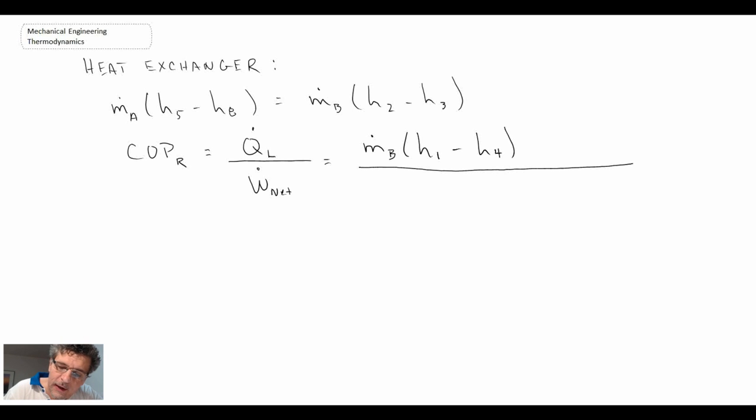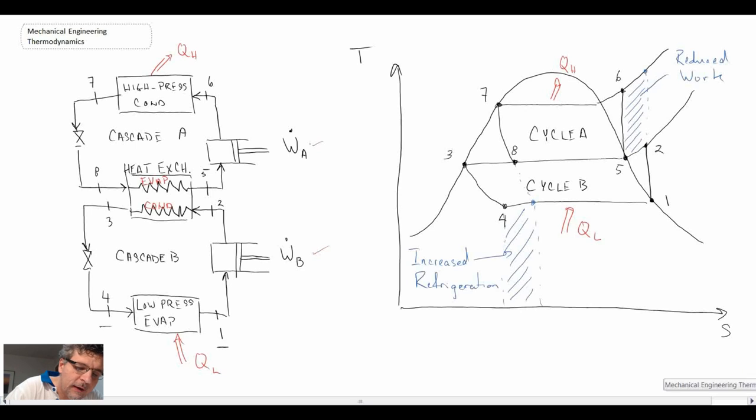The net work in is going to be the work in to compressor A as well as B.